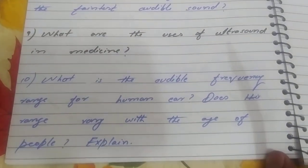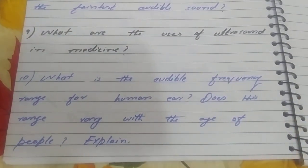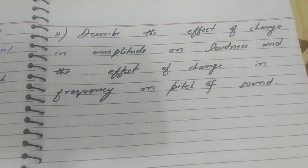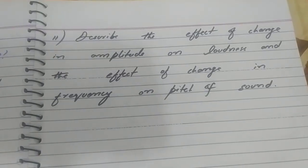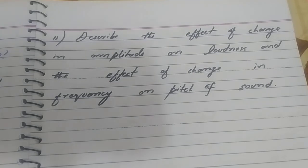Question ten: what is the audible frequency range for the human ear — does this range vary with age? Explain. Question eleven: describe the effect of change in amplitude on loudness and the effect of change in frequency on pitch of sound. These are all the short and long questions for Chapter 11.